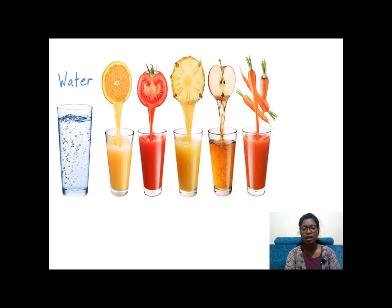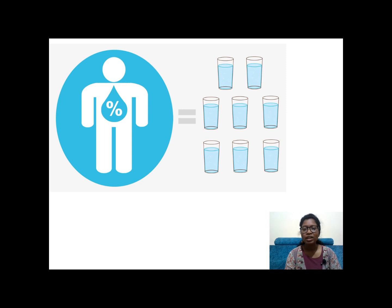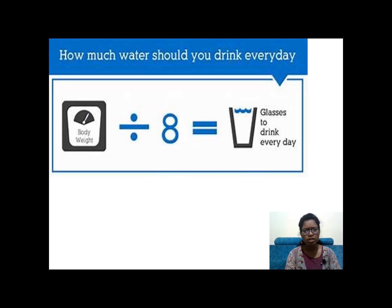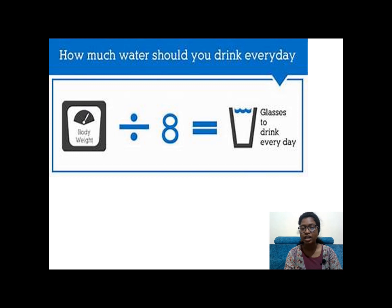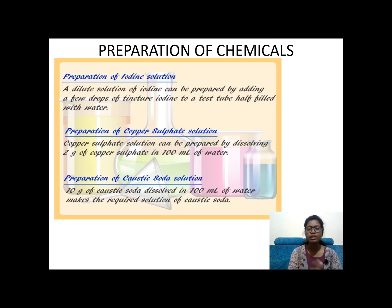Do you drink water daily? How many glasses of water do you drink? When you drink juice of vegetables and fruits, you are already getting a lot of water content. We have to drink nearly eight glasses of water a day. But body weight varies, so here is how to calculate: note down your body weight and divide it by eight — that gives you the number of glasses you should drink every day.